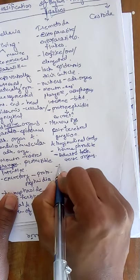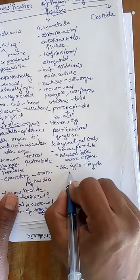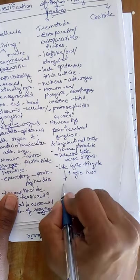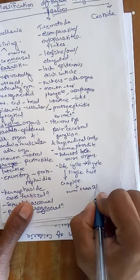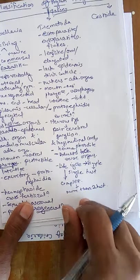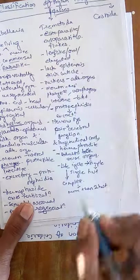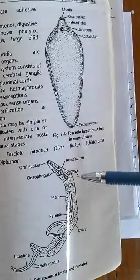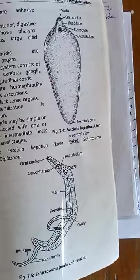The life cycle may be simple, requiring only a single host to complete, or complex, requiring more than two hosts. Larval stages are present in different hosts. Examples include liver fluke and Schistosoma, both with flat bodies acting as endoparasites.